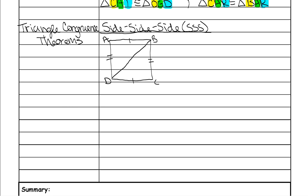The top side is congruent to the bottom side, the left side is congruent to the right side, and since they share the middle diagonal side, that is also congruent. Separate the triangles to see them clearly. On your test, it won't say side-side-side — you'll have to determine that from the picture by labeling what you're given. You're given a side, a side, and a side, so since there are three S's, it would be SSS.